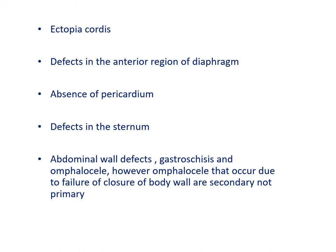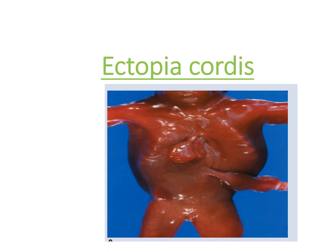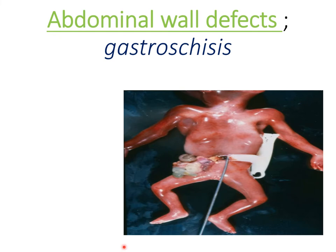Ectopia cordis occurs when the lateral body wall folds fail to close at the midline in the thoracic region, therefore causing the heart to lie outside the body cavity. As you can see here, this is the heart, and the folds did not close medially.